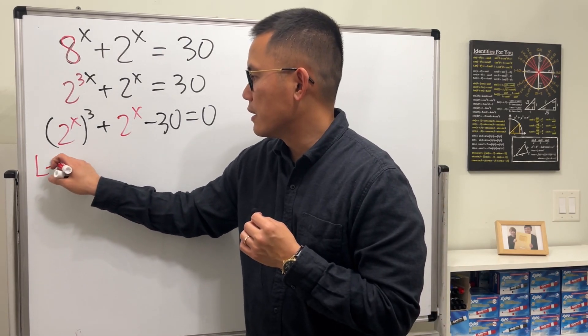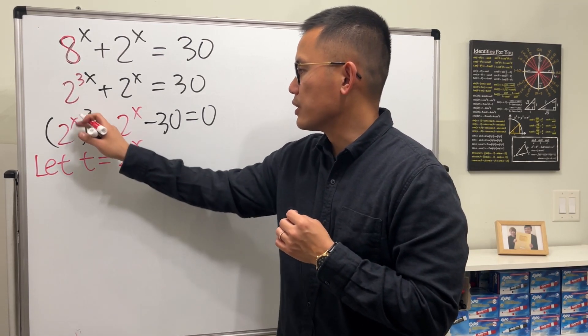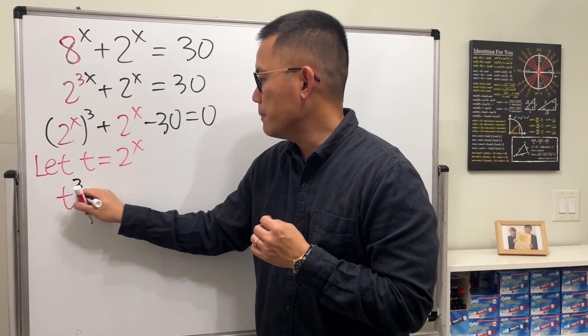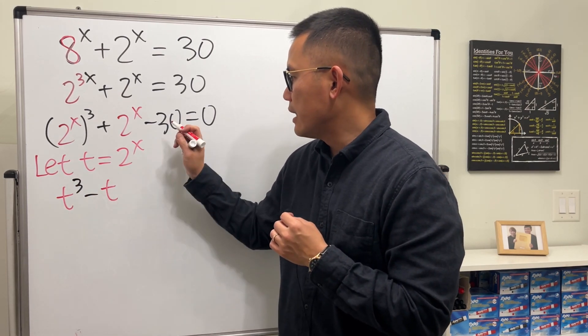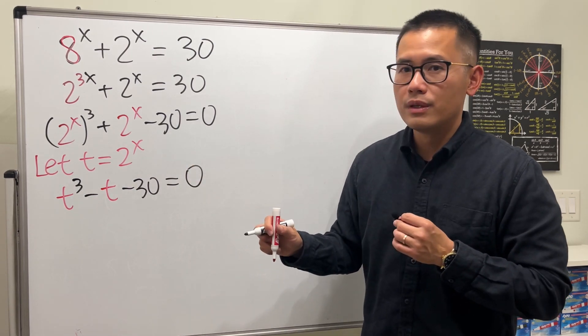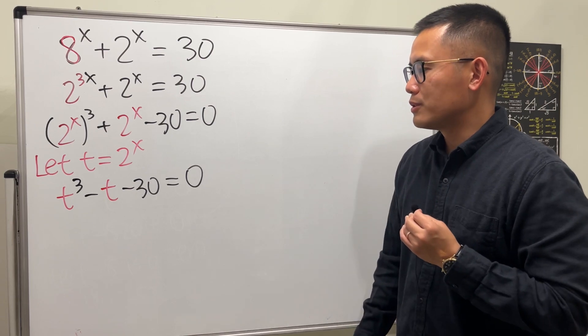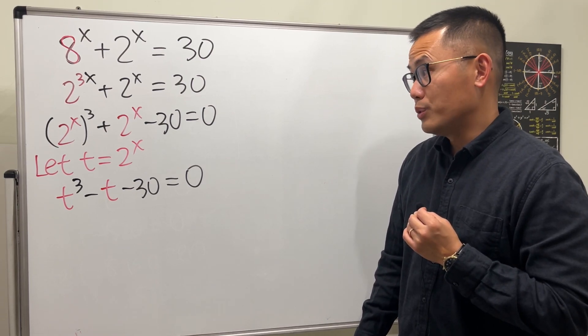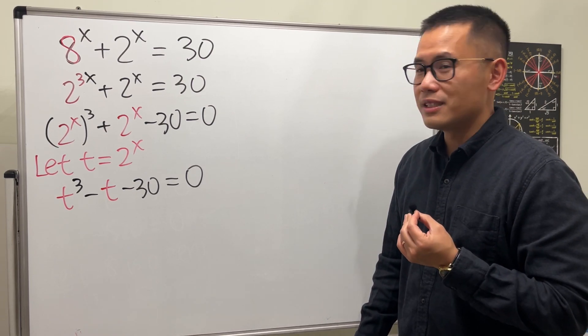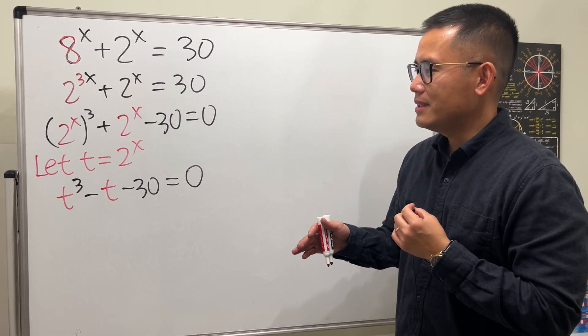We can do a quick substitution. Let t equal to 2 to the x. So this is just t to the 3rd power, plus t, and then minus 30, and that's equal to 0. Now, we should be able to handle this cubic equation much better. And the way to do so is to kind of guess the solution. You can try 1, 2, 3, I think.